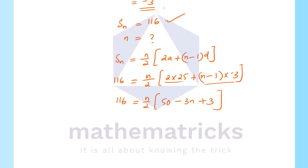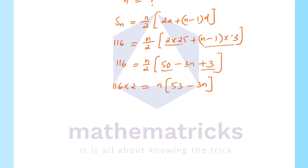Multiplying both sides by 2: 232 = n × (53 minus 3n) = 53n minus 3n². Rearranging: 3n² minus 53n plus 232 equals 0.